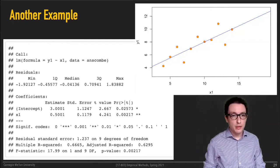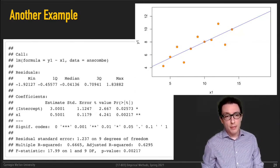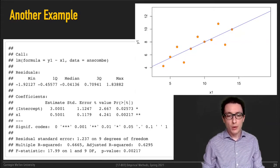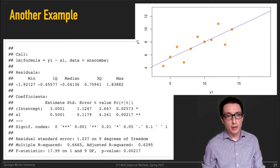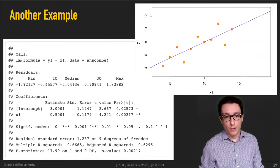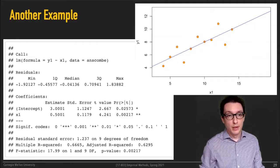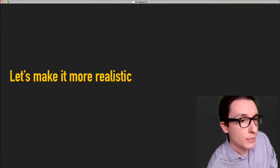The only other interesting thing in that R output is this R squared measure that tells you something about how well the data fits the model you estimated — a value between zero and one, and the higher the better. It tells you a little bit about how good this model is: the closer to one, the better the model is in some sense.